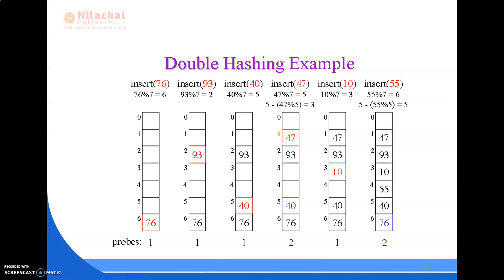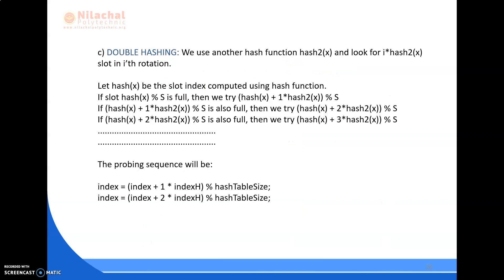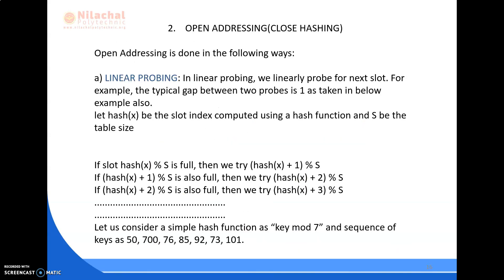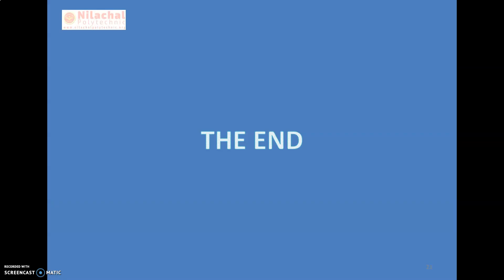So that is how double hashing works using two hash functions. We have now covered all three open addressing techniques: linear probing, quadratic probing, and double hashing, all used to resolve collisions. Hope this video is helpful for you. Thank you so much.